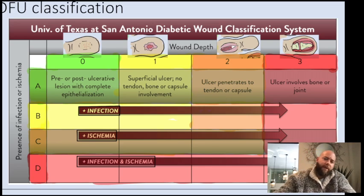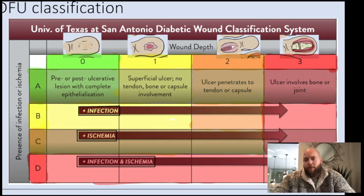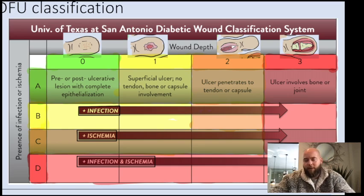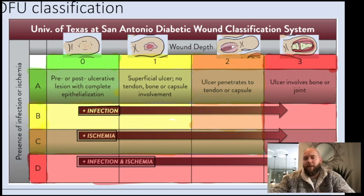In addition to the numeric grades, you have the letters A, B, C, and D. A is no infection, no ischemia, so most ulcers will just be an A. But you need to remember this pattern: infection, ischemia, infection and ischemia. B is if the ulcer, in addition to whatever layer it's in, has an infection. This is useful to communicate to other providers. B denotes infection.